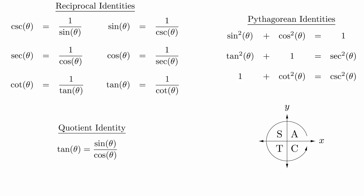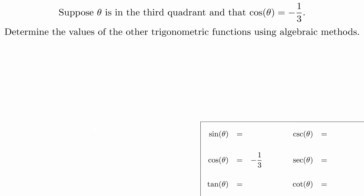Everything from here is a matter of logic and algebra. Suppose theta is in the third quadrant and that cosine of theta is negative one-third. Determine the values of the other trigonometric functions using algebraic methods.